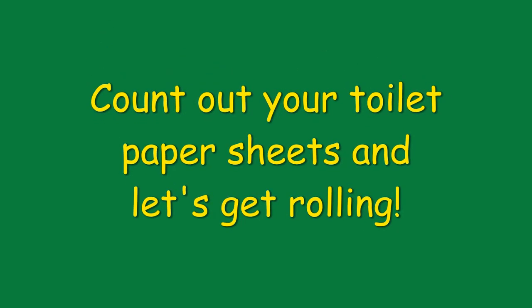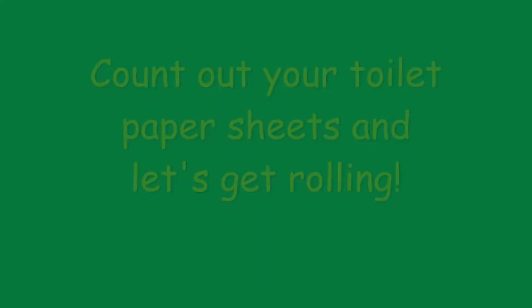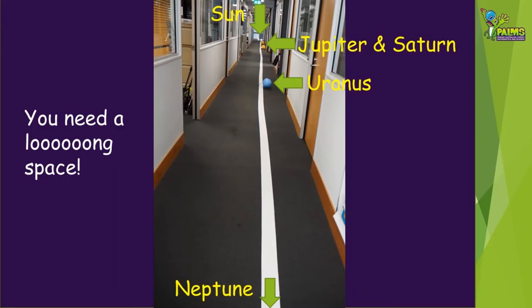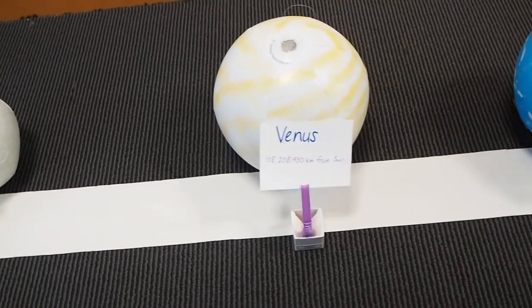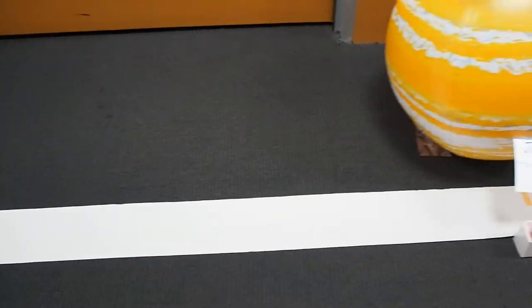Now you can start rolling out your toilet paper, counting the sheets and placing the labels for each planet. Just a reminder, you'll need a really long space to roll out your toilet paper scale — if the weather is fine, outside is probably easiest, but make sure you anchor down your toilet paper. Here's a tour of our solar system, or at least our scale model of it. There's a whole lot of space in space! We ran out of corridor and had to go around the corner to reach Neptune.